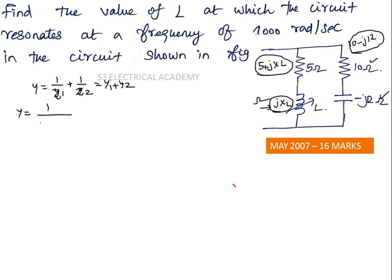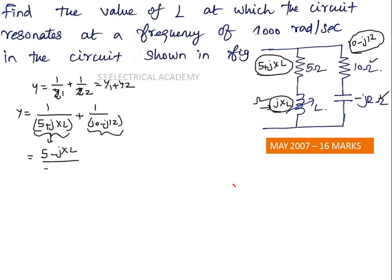The total admittance Y equals 1/(5 + jXL) plus 1/(10 - j12). Since we have complex terms in the denominator, take the conjugate of each term and multiply both numerator and denominator. This gives (5 - jXL)/(25 + XL²) plus (10 + j12)/(100 + 144), since (a + jb)(a - jb) = a² + b².